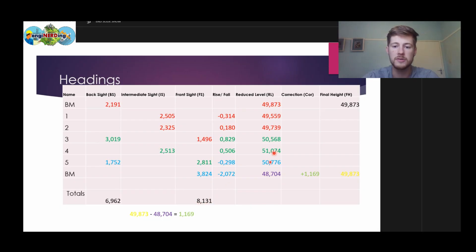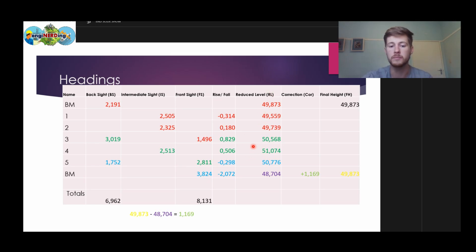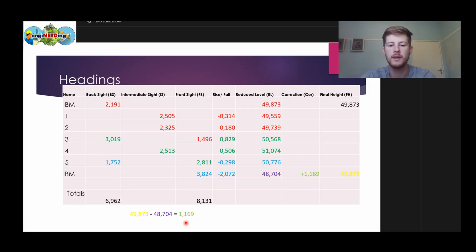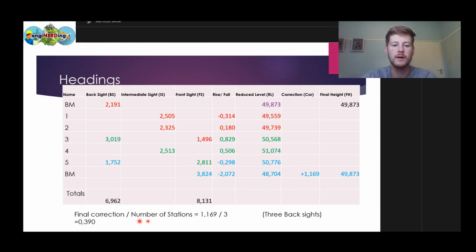These reduced levels are estimates and not our final values, because we need to correct them in case there was human error or an issue with equipment. So how do we correct this? We say final height minus our calculated reduced level, and we get our correction — in this case it's 1.169. Notice how the check value and this correction are the same quantity but opposite polarity. We're going to take this value and say our total correction divided by the number of stations will give us a correction per setup.